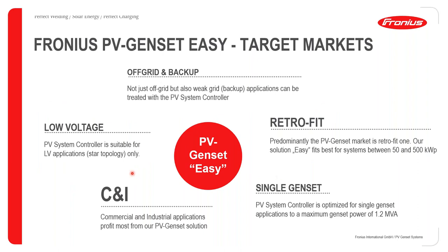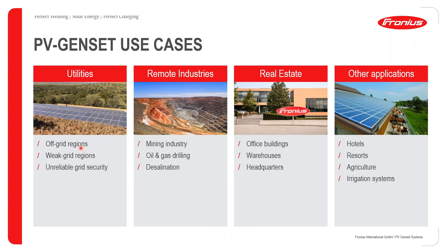The PV genset solution can be used across a wide range of industries. Common use cases include commercial and industrial (CNI) applications. For single genset applications, it is limited to 1.2 MVA. The recommended retrofit sweet spot is 50 to 500 kilowatt peak, but systems up to 1.2 MVA are possible. Applications include utilities, off-grid and weak-grid regions, remote industries such as mining, oil and gas, desalination plants, real estate including office buildings, warehouses and headquarters, and other applications such as hotels, resorts, agriculture, and irrigation systems.